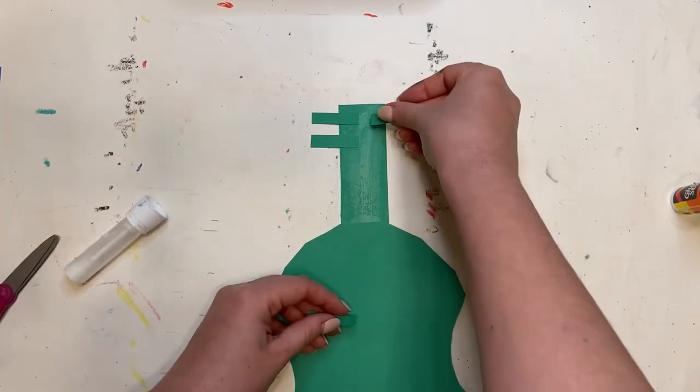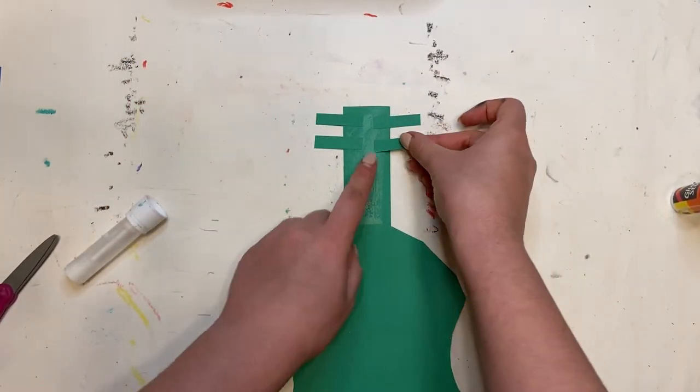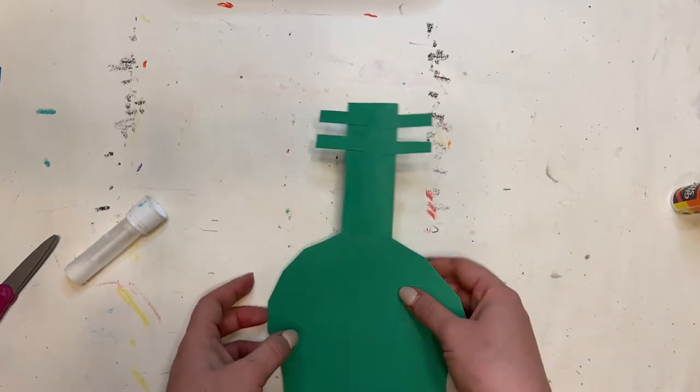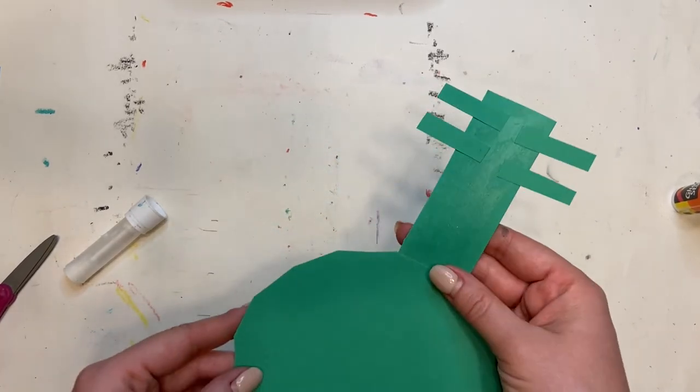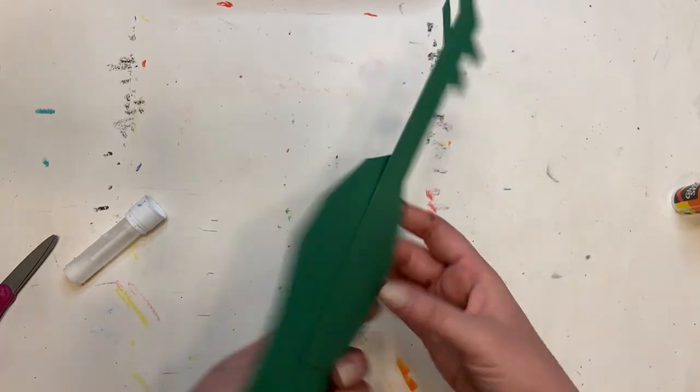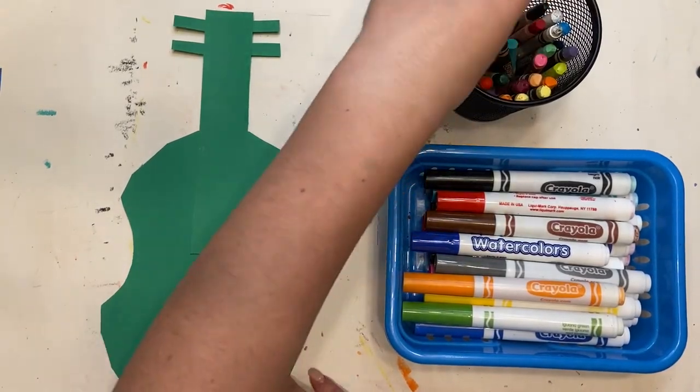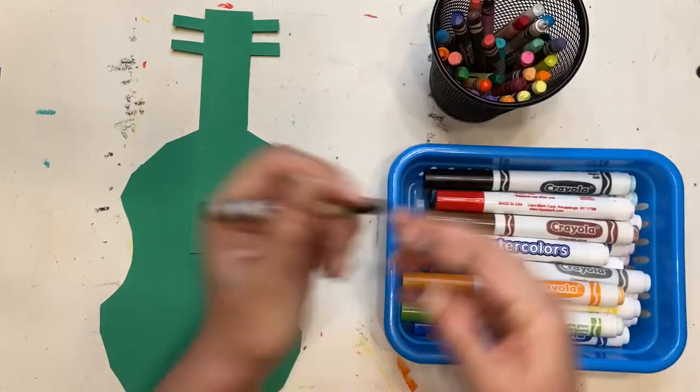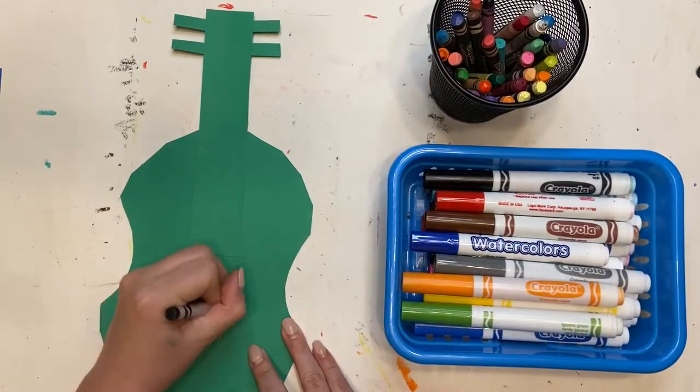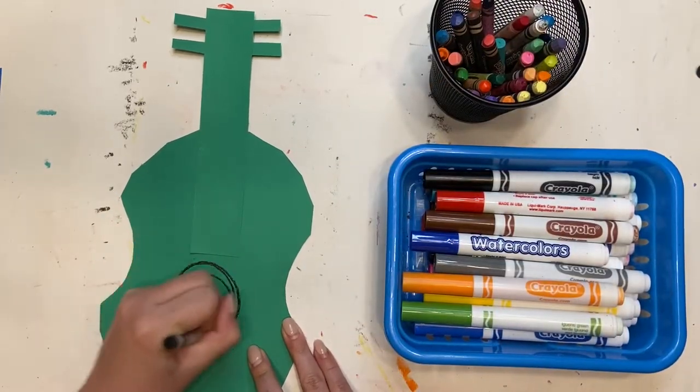Once you have that, give it a second to rest because we want that glue to dry so it doesn't stick to your table. So let it rest. All right, when it's dry we're gonna start adding details to our guitar, starting with a big circle in the middle.